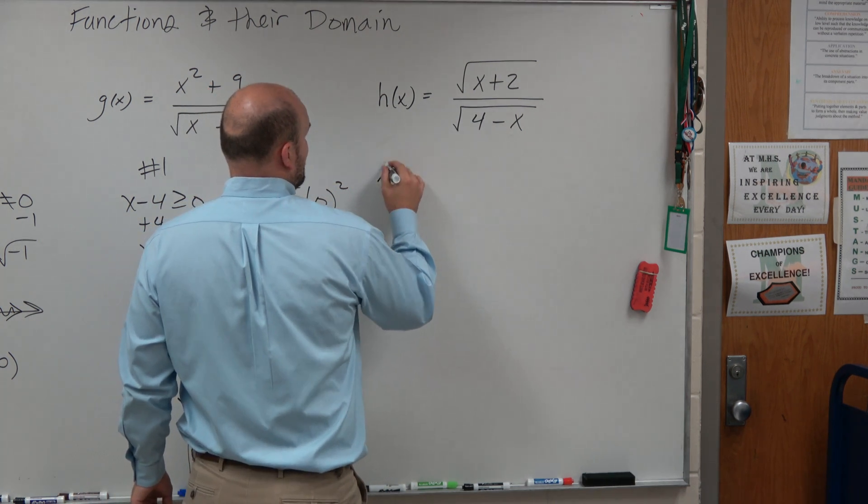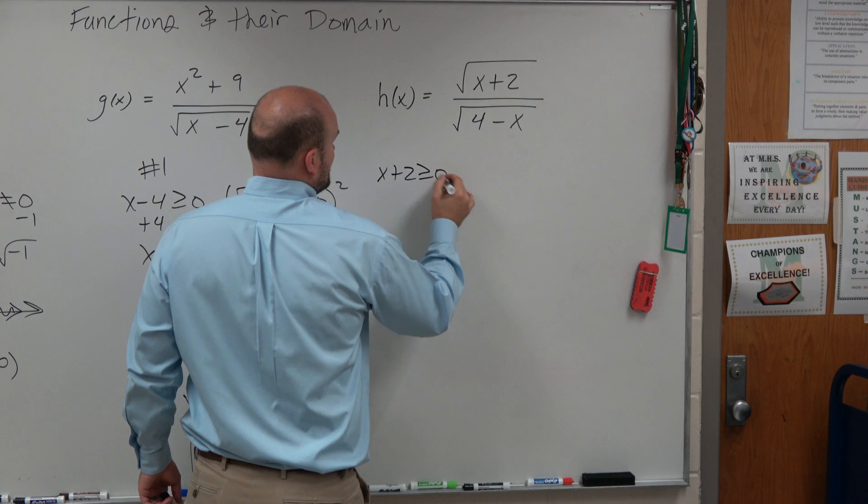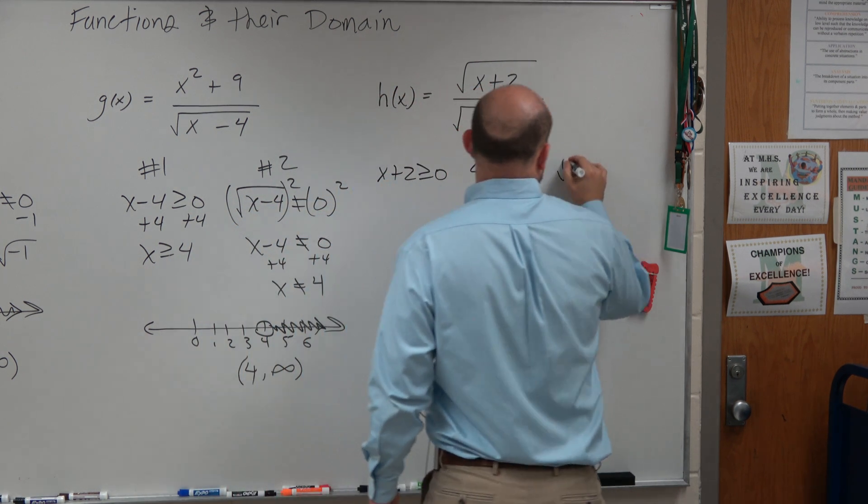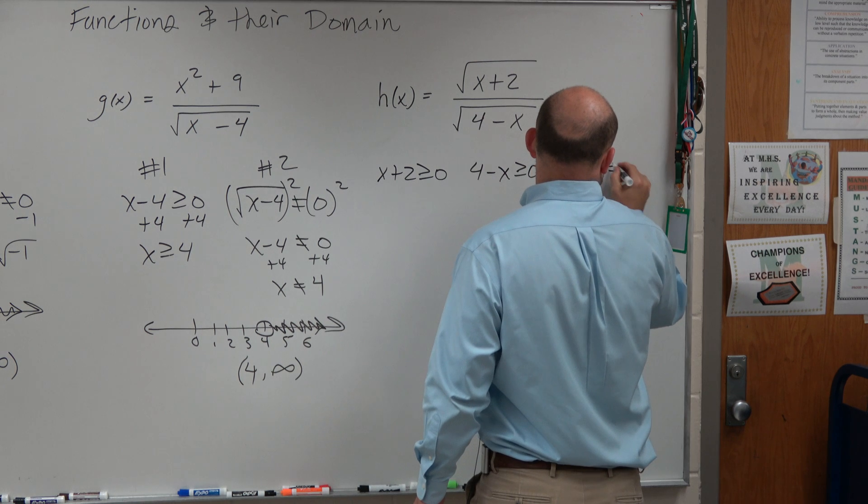So first thing I'm going to do: x plus 2 has to be greater than or equal to 0, 4 minus x has to be greater than or equal to 0, and the square root of 4 minus x cannot equal 0.